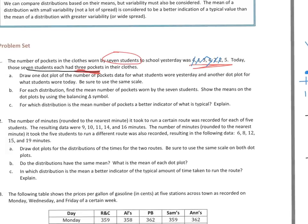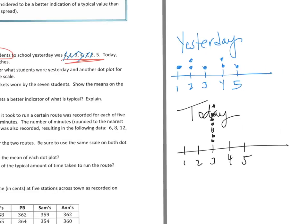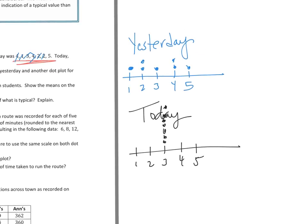So now, B says, for each distribution, find the mean number of pockets worn by the 7 students. Show the means on the dot plots by using the balancing triangle symbol. So I know already for today, it's 3. And the reason I know is I have 7 groups at 3, the average is 3, because there's nothing different.